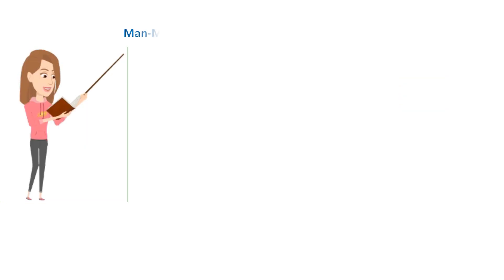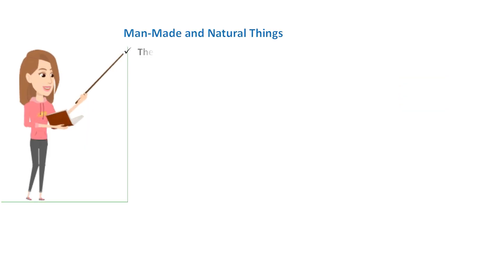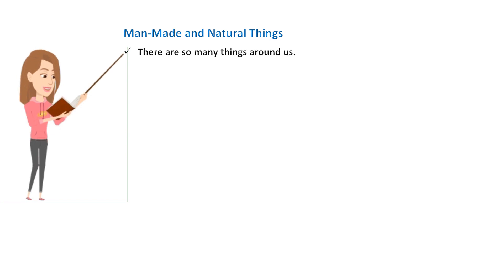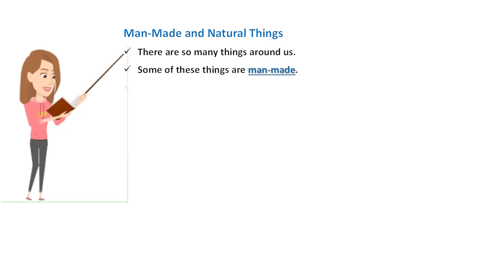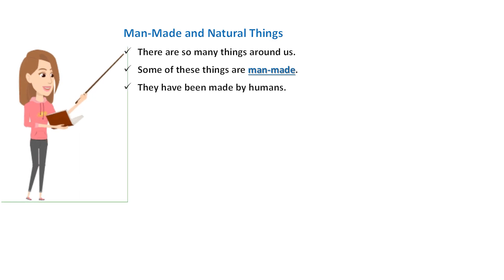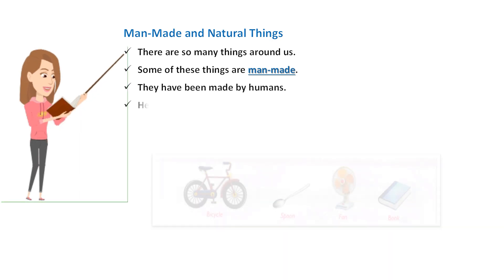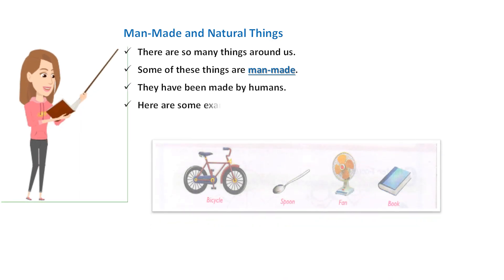Man-made and natural things. There are so many things around us. Some of these things are man-made — they have been made by humans. Here are some examples.